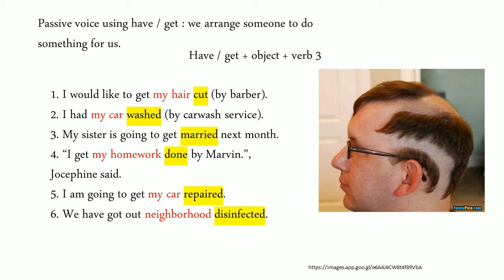For example, if you want to cut your hair, you don't do it by yourself — you go to the barbershop. If you want to check your teeth, you don't do it by yourself, but you visit a dentist. Example number one: I would like to get my hair cut. The object that gets the action is my hair, not me. And the action is cut. We use get here. We can also say: I want to have my hair cut — it is the same. You can use have or get.